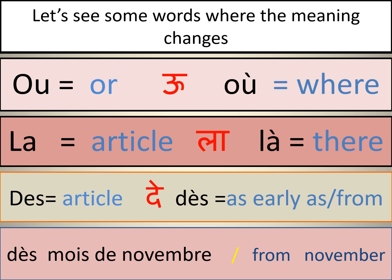Now let's see some words where the meaning changes. O-U 'ou' means 'or' in English, whereas O-U with a grave 'où' means 'where.' L-A 'la' is an article, whereas 'là' with a grave means 'there' — the pronunciation is the same. D-E-S 'des' is an article, whereas 'dès' with a grave means 'as early as' or 'from.' A small example: 'dès novembre' means 'from November' or 'as early as November.'